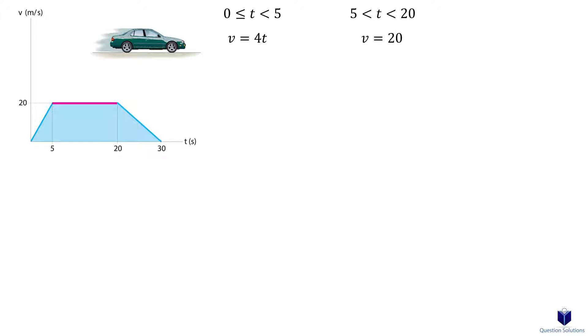The second segment between 5 and 20 seconds is simply v equals 20. And for the last segment, you can use y equals mx plus b to figure out the equation, which is v equals negative 2t plus 60.